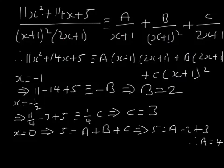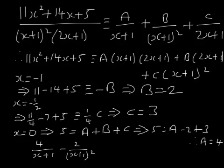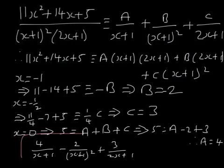Write out the answer clearly at the end rather than leaving it in the working. The answer is 4 over (x plus 1) minus 2 over (x plus 1) squared plus 3 over (2x plus 1). Don't squash your work in — I'm just doing it here so you have a record of it all on one slide. Do make sure you write out the final answer. One more example to go, on the next slide.